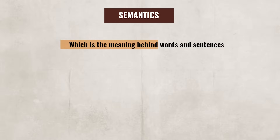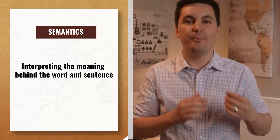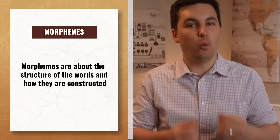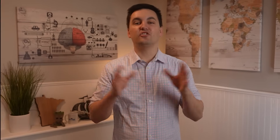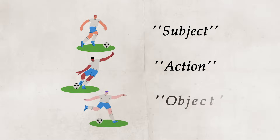Speaking of meaning, the next concept is semantics, which is the meaning behind words and sentences. Semantics explain how we interpret language. Remember, semantics are different from morphemes — semantics are about interpreting the meaning behind the word and the sentence, while morphemes are about the structure of the words and how they are constructed. For instance, 'the boy kicked the ball' conveys meaning about the action of kicking, done by the boy, on the object, the ball. Semantics help us understand that the boy is the subject, the kicking is the action, and the ball is the object.